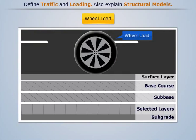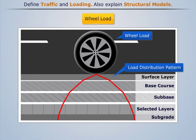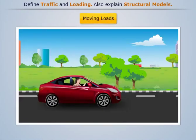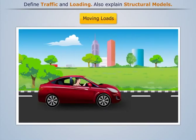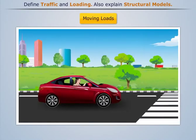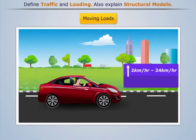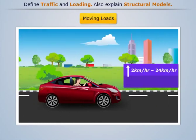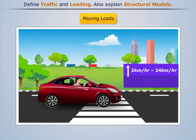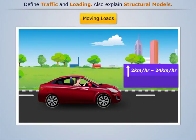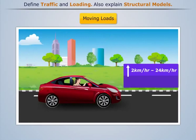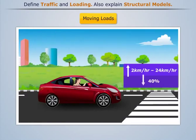Wheel configuration affects the stress distribution and deflection within the pavement. Moving loads affect the pavement design — studies show that when speed is increased from 2 km/h to 24 km/h, the stresses and deflection reduce by 40 percent.